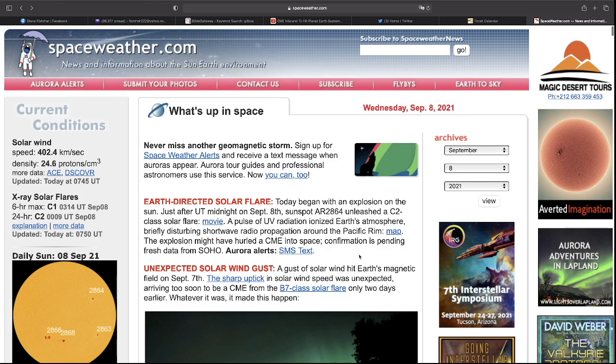A pulse of UV radiation ionized Earth's atmosphere, briefly disturbing shortwave radio propagation around the Pacific Rim. The explosion might have hurled the CME into space. Confirmation is pending fresh data from SOHO.